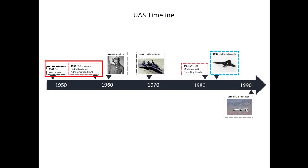Tensions in the world still continued after World War II, and in 1947 the Cold War with the Soviet Union began. In 1956, the CAA became the Federal Aviation Administration, also known as the FAA. One of the responsibilities of the FAA is to regulate the National Airspace System, also referred to as the NAS. Without going into the history of the Cold War, it would be safe to say that there was mutual distrust and paranoia between the United States and the Soviet Union.